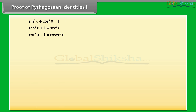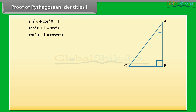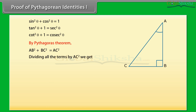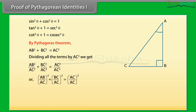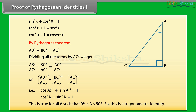Proof of Pythagorean Identity 1: Now we will prove one Pythagorean identity and use it to prove other identities. For that we take a right-angle triangle ABC. By Pythagoras theorem, AB square plus BC square is equal to AC square. Dividing each term by AC square, we can write it as: AB upon AC whole square plus BC upon AC whole square equals AC upon AC whole square. That is, cos square A plus sin square A is equal to 1. This is true for all A such that 0 degree is less than or equal to A which is less than or equal to 90 degree. So this is a trigonometric identity.